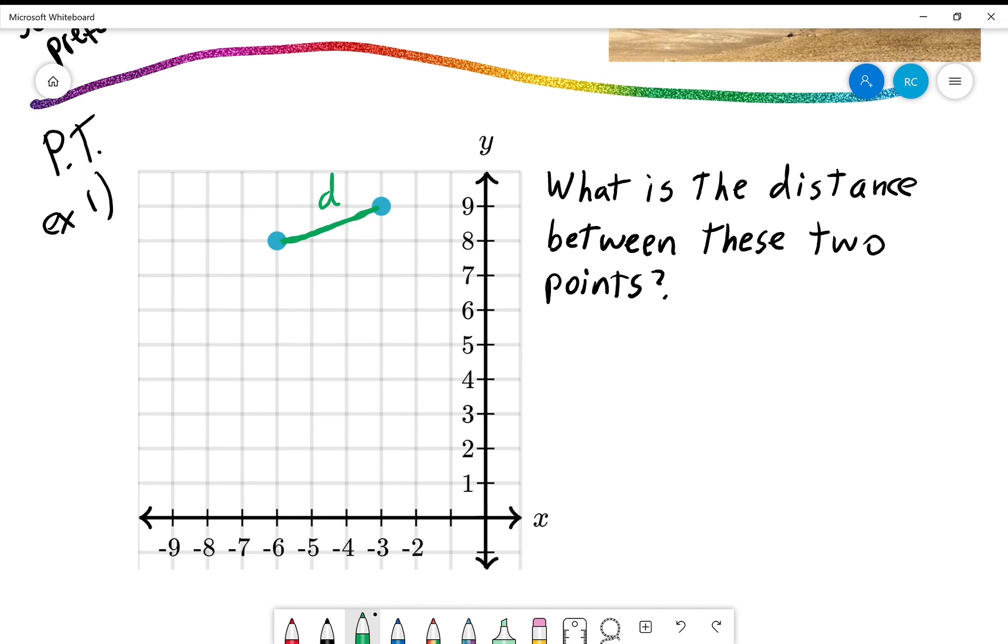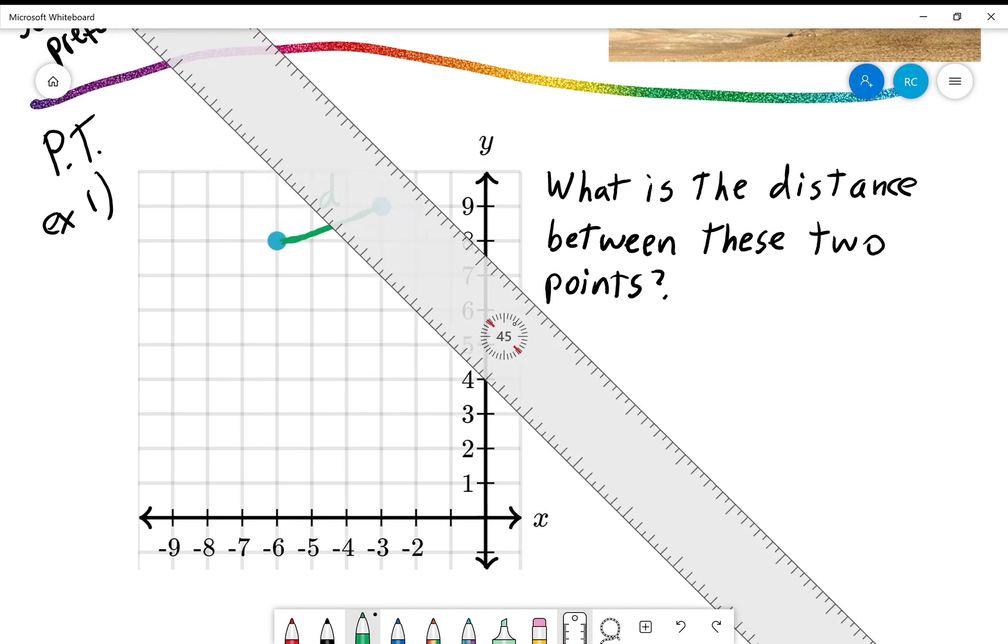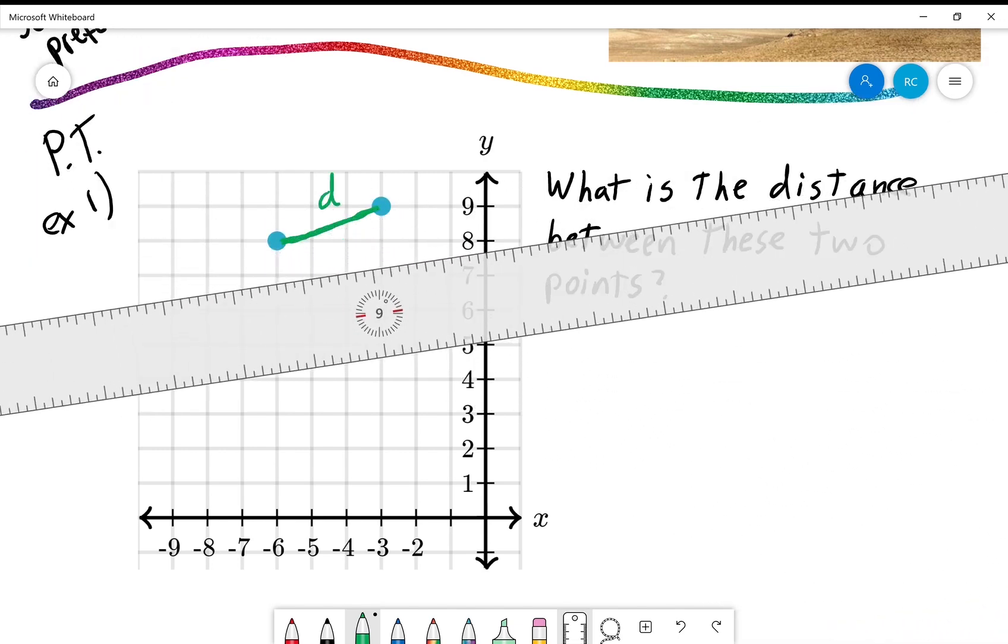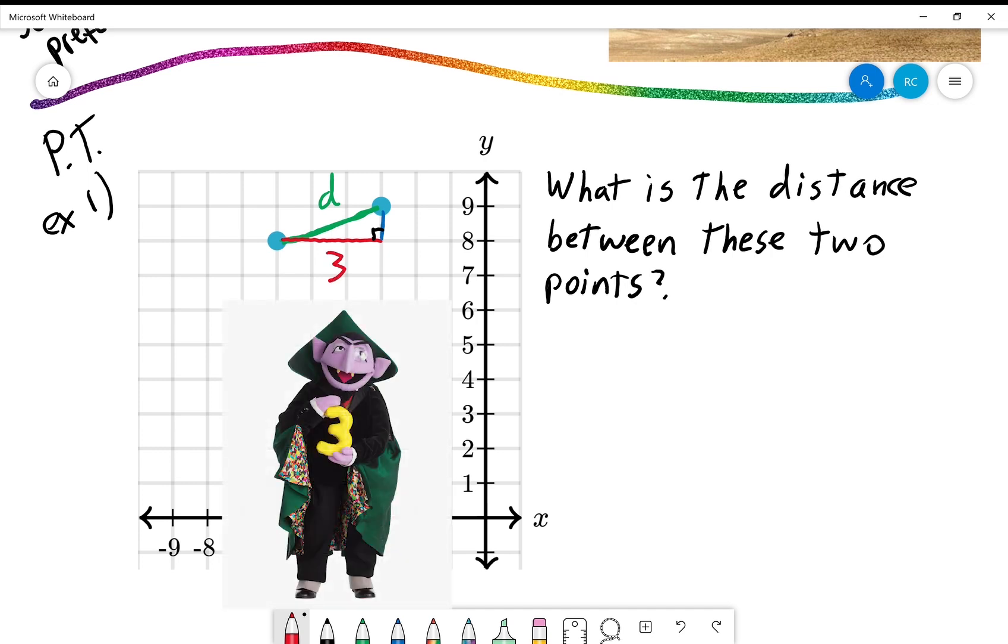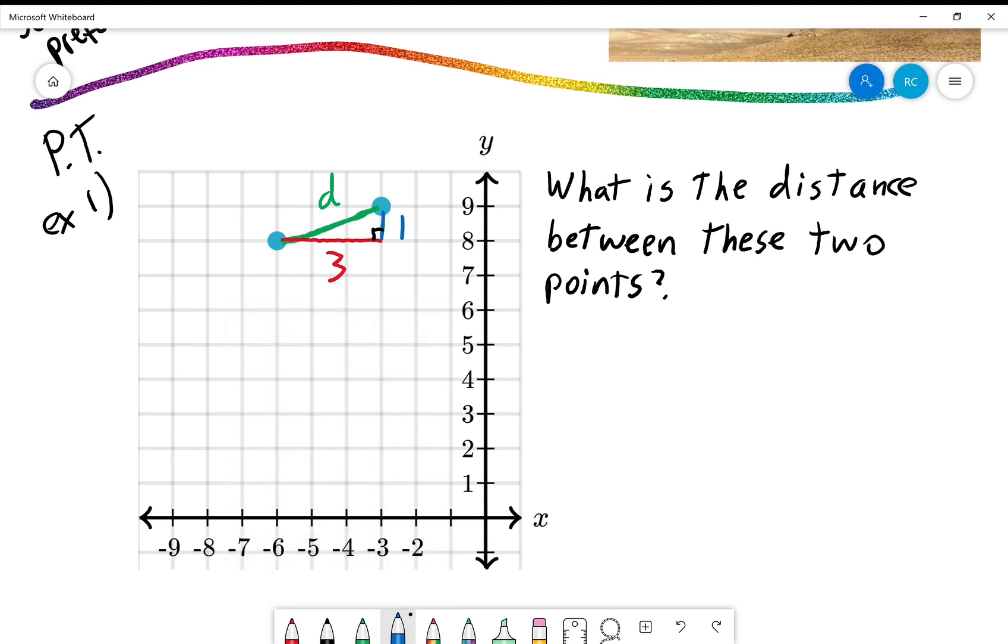Okay, now at first it looks like there isn't anything we can do here. I suppose I could bust out a ruler, but I don't know what the scale is. So instead, what I'm going to do is I'm going to make a right triangle with sides that I know. I have this tiny right triangle here and this bottom side is how many units? Well, it goes from negative six to negative three, but we could just count one, two, three. And up this side is one.